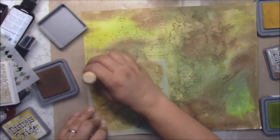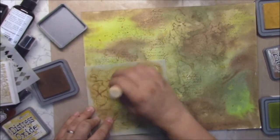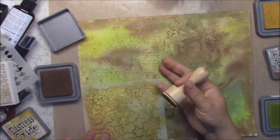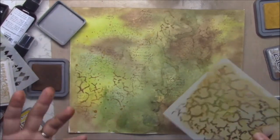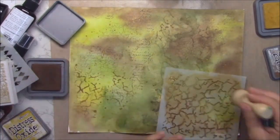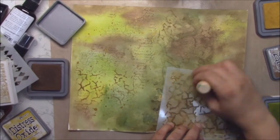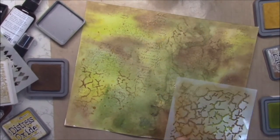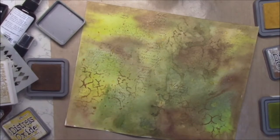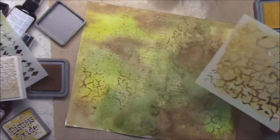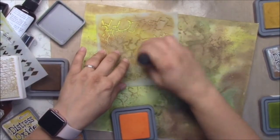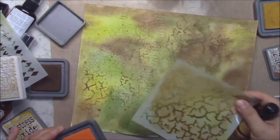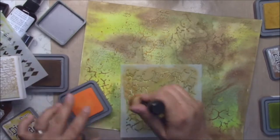And when you want to achieve this oxide effect you can even over this stamped and stenciled area, you can spritz a little bit of water. And you will have nice effect. And also a little bit spiced marmalade. Just touch it. I love it. I love how it looks like.